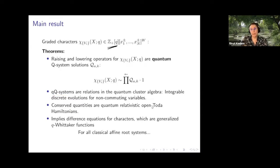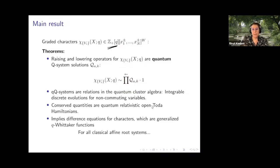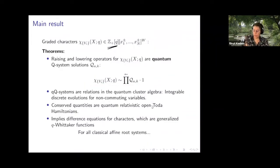How do you get a quantum Q system? You take the Q system, consider it as a cluster algebra, and as such it has a canonical quantization. The Q system itself is an integrable discrete evolution, and the quantization is also an integrable non-commutative quantum discrete evolution for some non-commuting variables — these raising operators. The conserved quantities of this discrete evolution turn out to be quantum relativistic Toda Hamiltonians, and all of this implies that these graded characters satisfy certain difference equations — Toda-type equations.